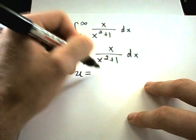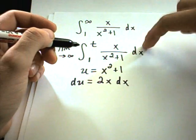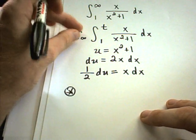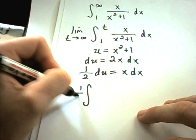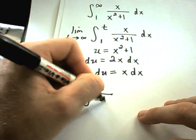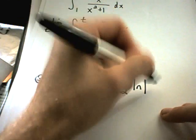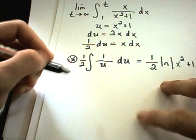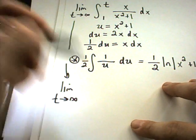This is a u-substitution problem. You can let u equal x squared plus 1. du is going to be 2x dx. So I've still got an x dx to replace on the top. If I divide by 2, I'll have 1 half du equals x dx. I'm going to examine the indefinite integral - I'm going to forget the limits, forget the 1 to t. If I plug all this in, my x dx is going to be replaced with 1 half du, and then I've got 1 over u left in the denominator. If I integrate this, I'll get 1 half the natural logarithm of u. But u in this case is x squared plus 1.